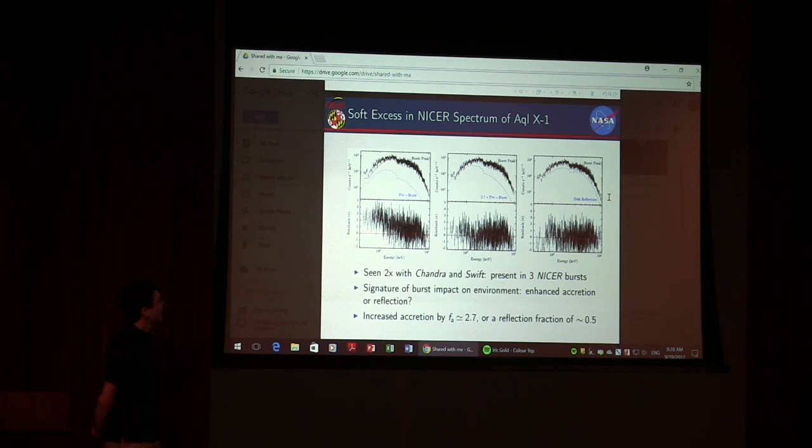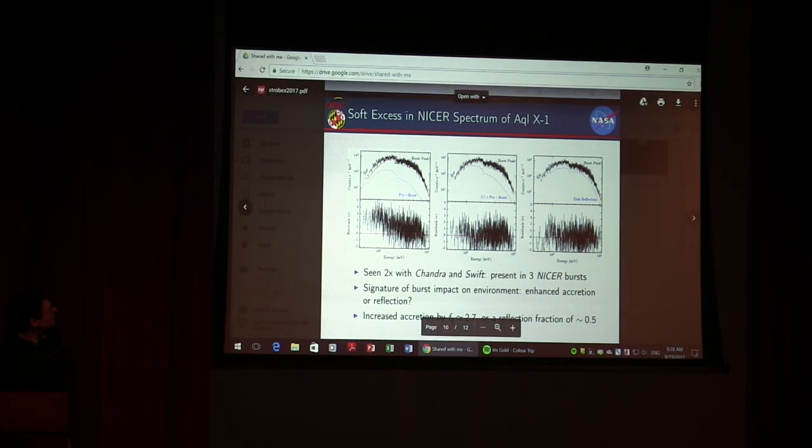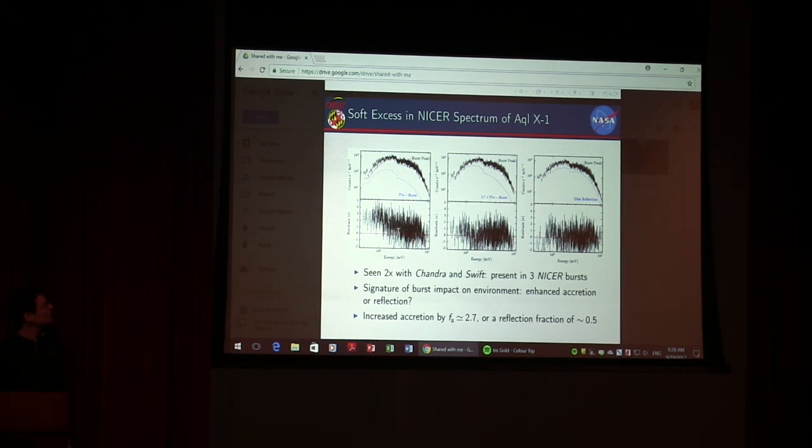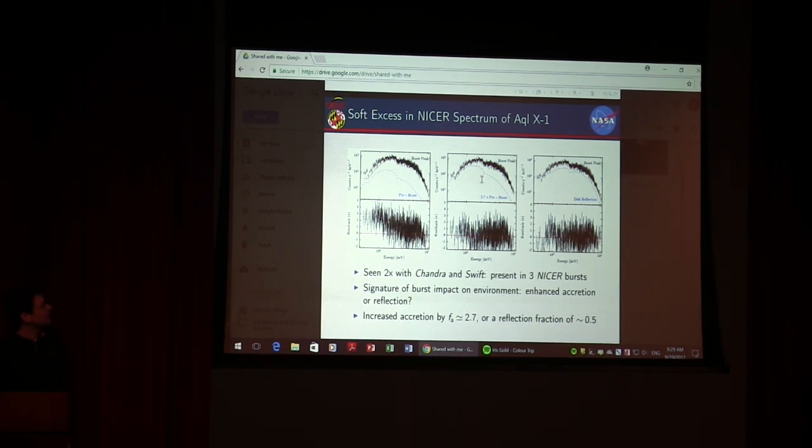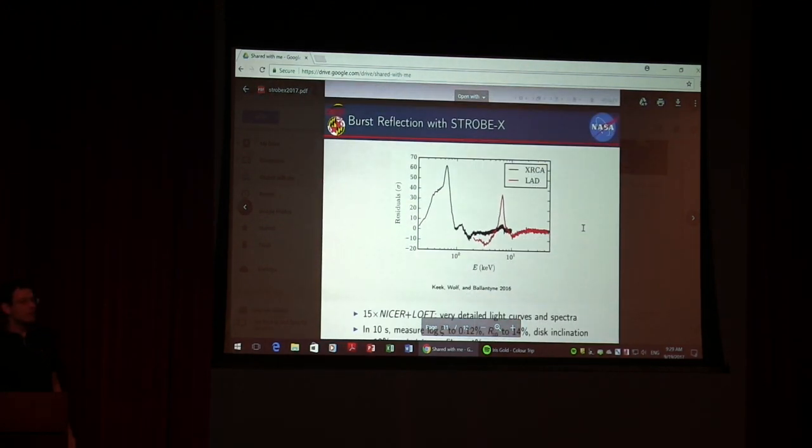Now we have NICER. One of the first bursts I looked at was from Aql X-1. NICER does cover the soft part. You see also here a soft excess similar to what we saw with Swift XRT. But with Swift XRT that was a spectrum taken over an hour, whereas here this is a five-second integration. You can explain that with a reflection model, but there's not much detail. So you can also explain it by enhanced accretion that might be induced by radiation drag.